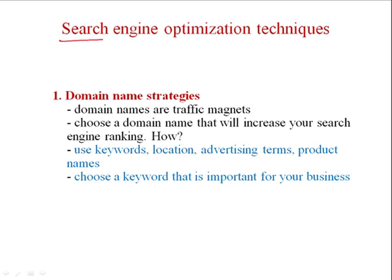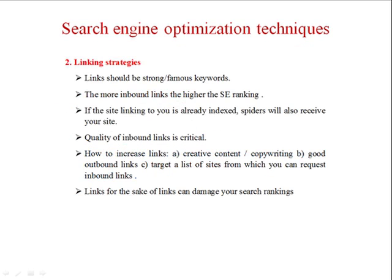Now I will go through some search engine optimization techniques to improve optimization. The first is domain name strategy: domain names are traffic magnets. Choose a domain name that will increase your search engine ranking. The main aim is to use keywords, location, advertising terms, and product names. Choose keywords that are very important for your business and highly representative of your business.